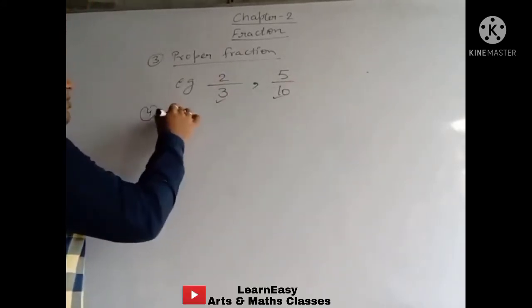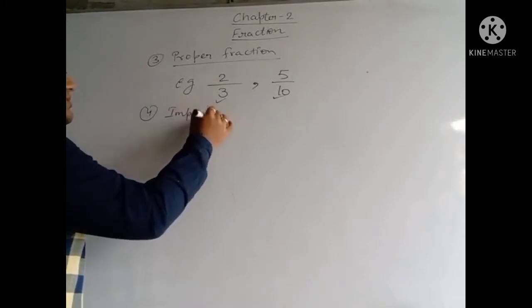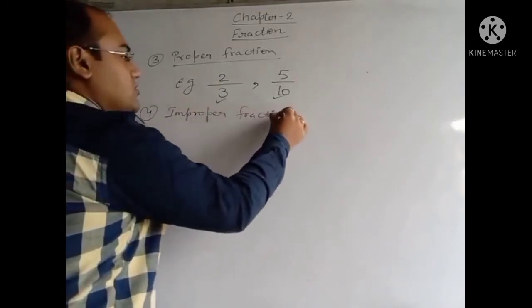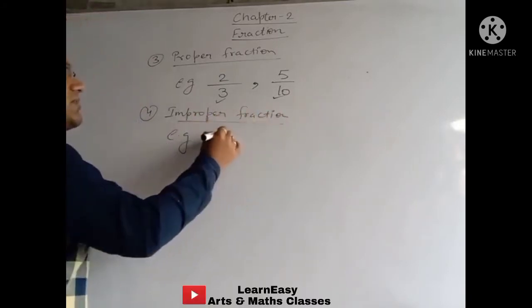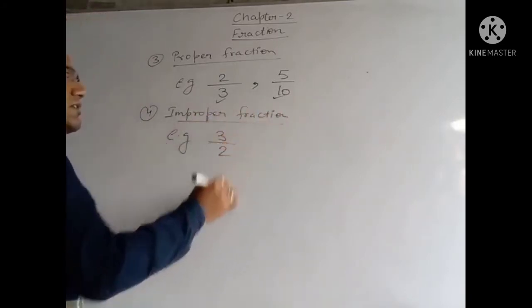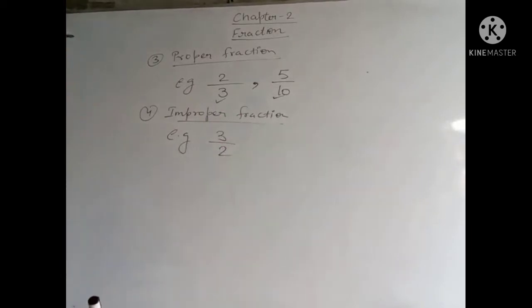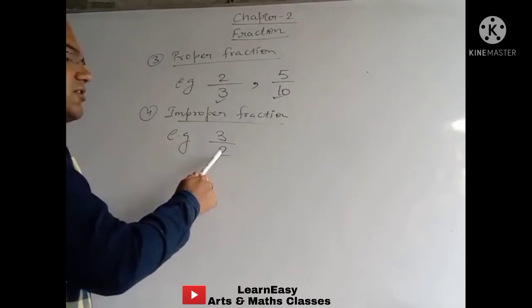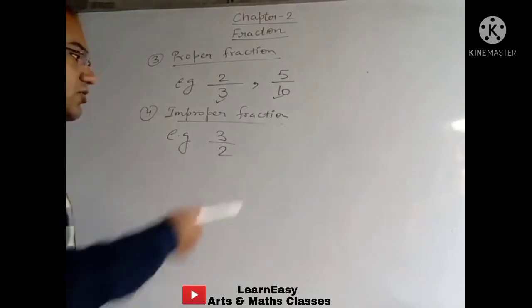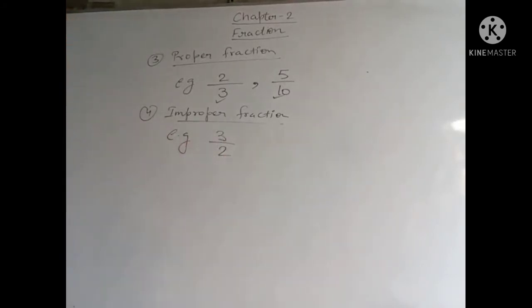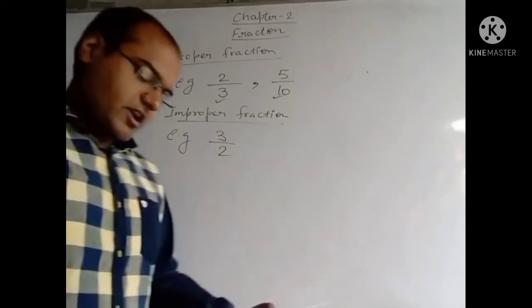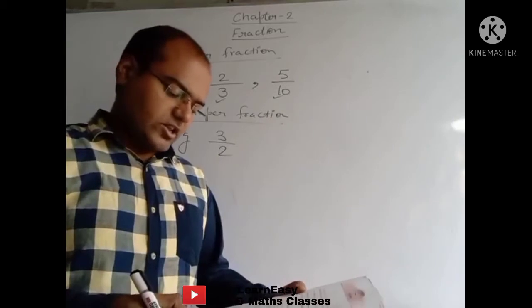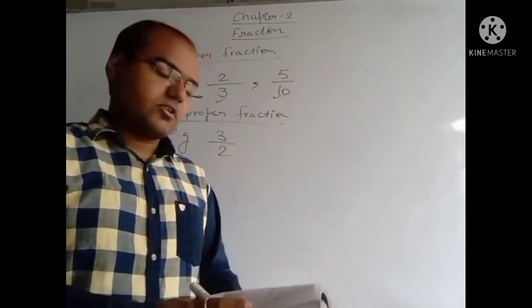The fourth type is Improper Fraction. In an Improper Fraction, the numerator will be greater than the denominator. Such fractions are known as Improper Fractions. For example, 3 upon 2 — here the numerator 3 is greater than the denominator 2. Such examples are known as Improper Fractions. This is also given in your textbook on page number N17.